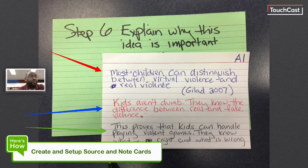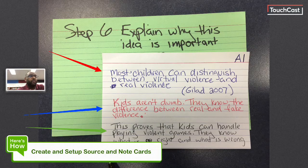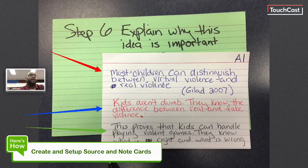Put it all together and you have a note card. My 'why this is important' is: this proves that kids can handle playing violent games — they know what is right and wrong. Real short, real simple. You only want one idea or fact per card. And if you're taking it word for word, it needs to be in quotation marks.